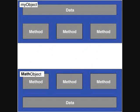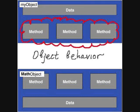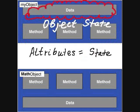All object methods specify its behavior. The attributes define its current state. We say that the attributes of an object determine its state.